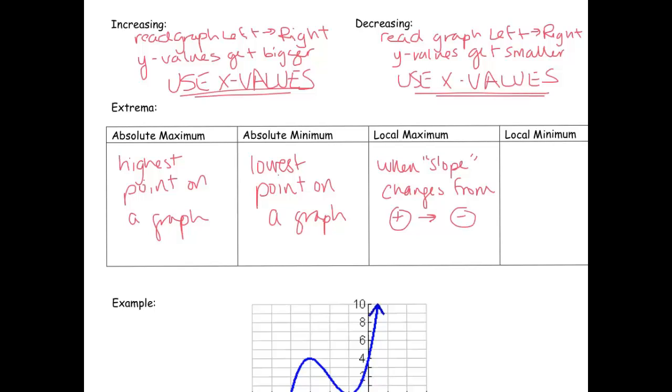And again, we always read a graph from left to right. And then a local minimum occurs when the slope changes from negative to positive. Let's take a look at the example below and see if we can make some sense of this.